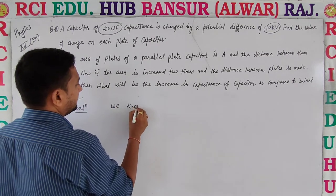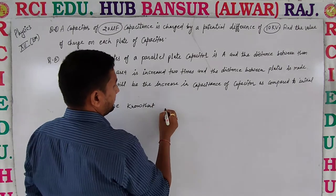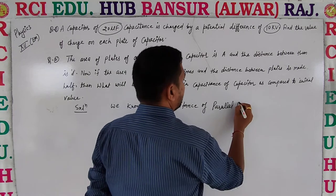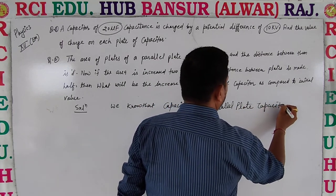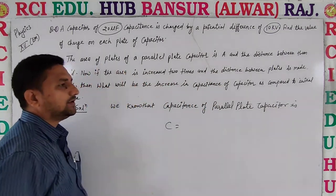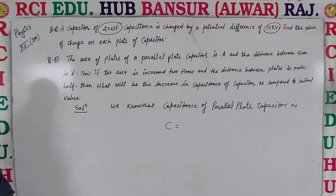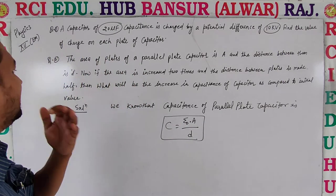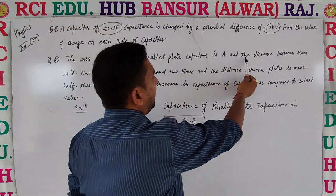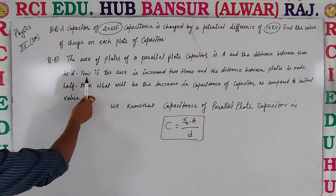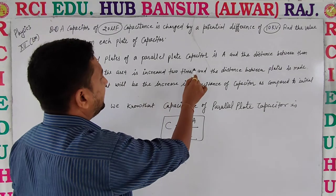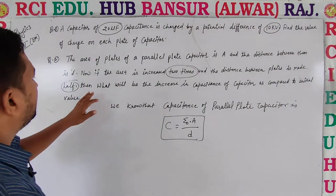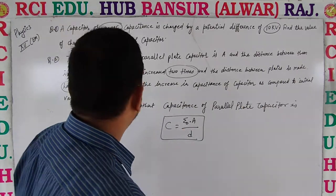We know that the capacitance of a parallel plate capacitor is C is equal to ε₀A/d. Now if the area is increased two times and the distance between plates is made half, what will be the increase in capacitance of the capacitor as compared to the initial value?